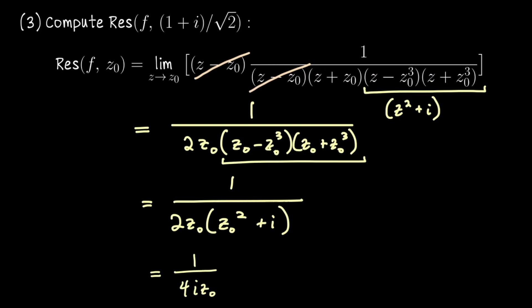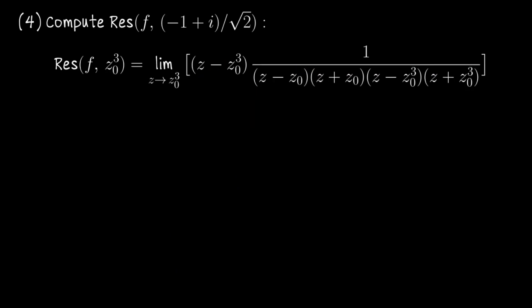Now that we've done this what I would like for you to do is pause and work out the residue of f at the pole in the second quadrant and if you would like you can leave it in a form similar to this one. Okay let's see if this is what you got. The first thing I did was cancel out z minus z naught cubed with the factor as it appears in the denominator. You could then recognize that this factoring I've done here is z squared minus i it might be more advantageous to work that way. Evaluating this limit